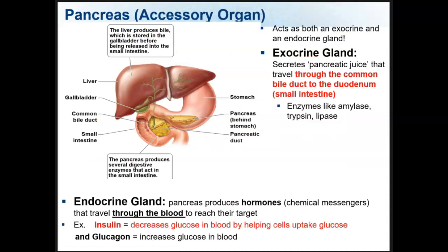The pancreas is another accessory organ of the digestive system and a very busy organ — it acts as both an exocrine and an endocrine gland. As an exocrine gland, it secretes pancreatic juices that travel through the common bile duct to the duodenum, where most chemical digestion takes place. It secretes enzymes like amylase, trypsin, and lipase to digest lipids, carbohydrates, and proteins. As an endocrine gland, it secretes the hormones insulin and glucagon. Insulin controls blood glucose levels by allowing glucose to be absorbed into cells, lowering blood glucose.